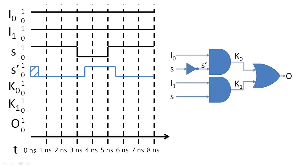The output of the AND gate from the top path will be 1, 1 ns after both S' and I0 are 1. It will be 0 or undefined at all other times.